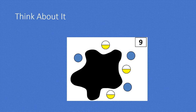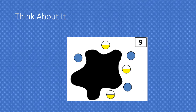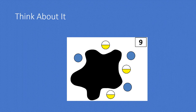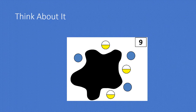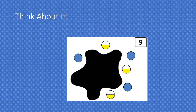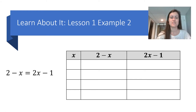Let's think about it. This is an activity called SPLAT. We know the total value of the dots should be 9, as represented in the top right-hand corner, and we can see that there are three solid dots and three half-shaded dots. What is the value of the dots under this SPLAT? This is the same process we will use to solve equations — we have something that we don't know, and we're going to use our reasoning to figure out what that value actually is.